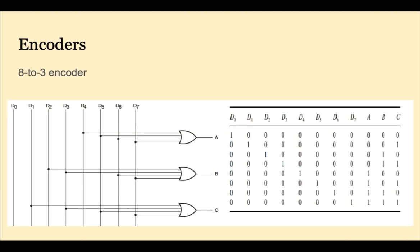Encoders do the opposite of the decoders. An encoder takes 2 to the N inputs and produces N binary outputs.